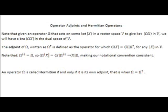Let's define the adjoint of operator omega, written as omega dagger, to be the operator which acts on the right of the dual of x to give you the dual of omega x.